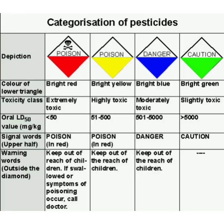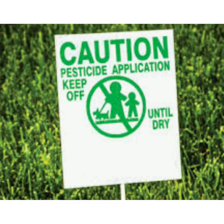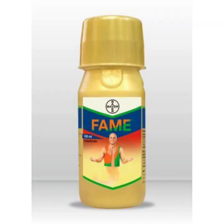The last IPM tool is chemical methods. There are four categories of pesticides based on toxicity level. If you need to use chemical pesticides, always go for green-labeled toxicity level pesticides because they are safer for humans and honeybees. Do not opt for red, yellow, or blue — they are very dangerous.